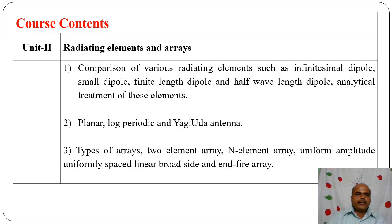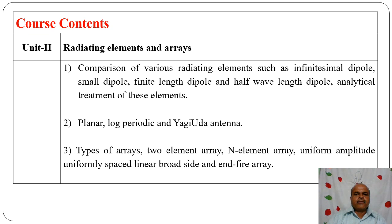Chapter two covers radiating elements and arrays. We study comparison of various radiating elements such as infinitesimal dipole, small dipole, finite length dipole, and half-wavelength dipole, along with analytical treatment and mathematical analysis of all these dipoles. Then planar log-periodic and Yagi-Uda antennas, types of arrays: two-element array, N-element array, uniform amplitude, uniform spacing, linear broadside, and end-fire arrays.